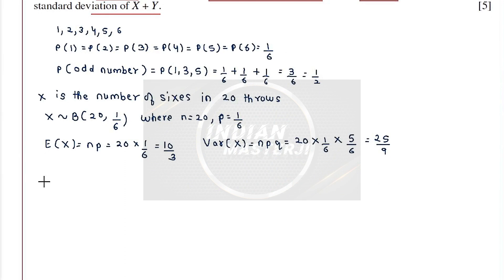Now what is Y? Y is the number of odd number scores in 20 throws.